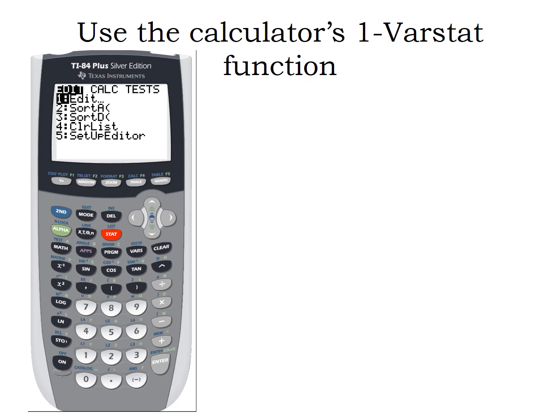So first, we're going to go to stat here in the middle of the calculator and edit, which is already highlighted. So we're going to hit enter. When we do that, we're going to see six lists. So as I scroll to my right here, I'm going to see three, four, five and six.